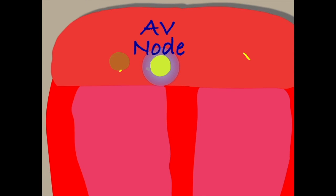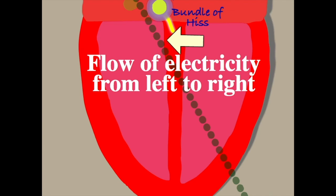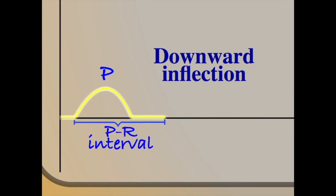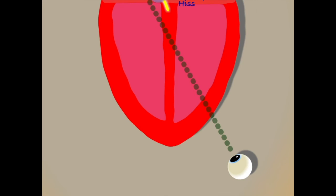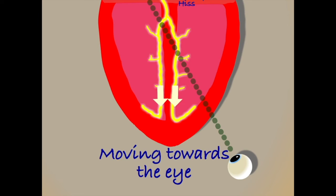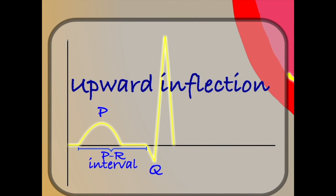The AV node now passes the electrical impulse down into the ventricles. Because the left ventricle is slightly bigger than the right, to start with there is a slight flow of electricity from left to right. Therefore the electrical impulse travels briefly away from the eye, leading to a small downward inflection on our ECG, which we label Q. It then carries on down the left and right branches, moving rapidly towards the eye, giving us an upward inflection on our ECG, which we label R.